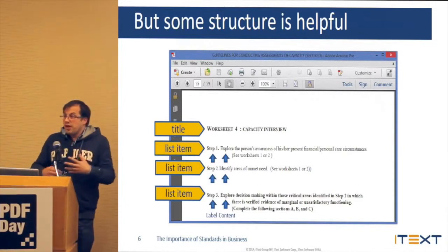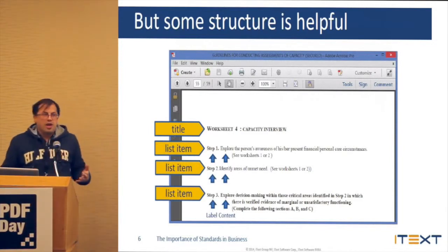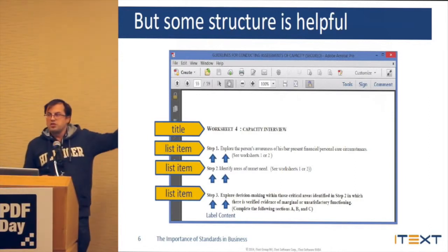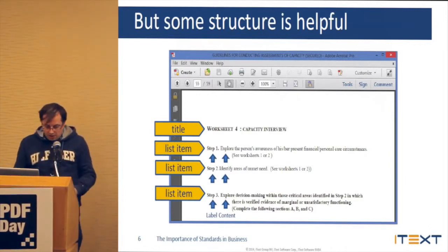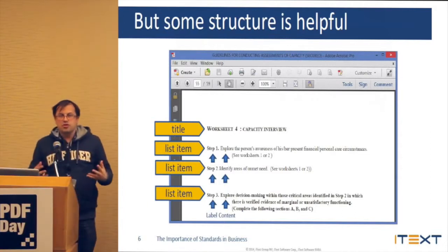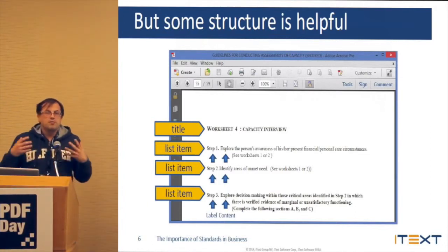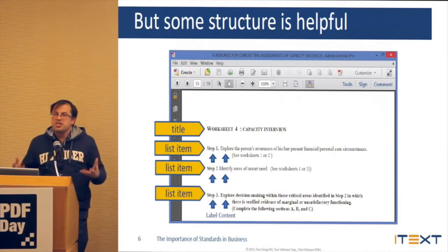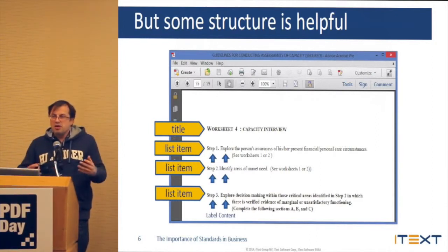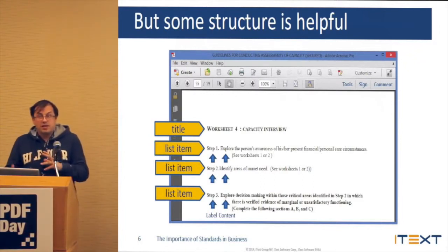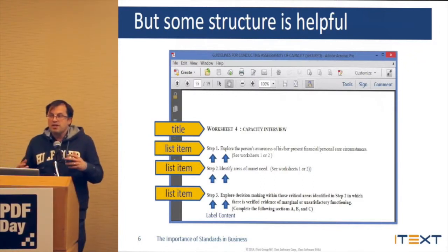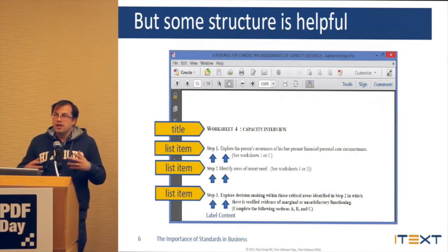Now, you can understand this because you're human. For a machine, it's more difficult to see this structure. So what we are going to do is add this structure to the document so that the machine can understand it, so that the machine can read the document. Why is this important? It's important because when a machine can read it, it can be used with assistive technology so that blind people, the visually impaired, can understand what the document is about.